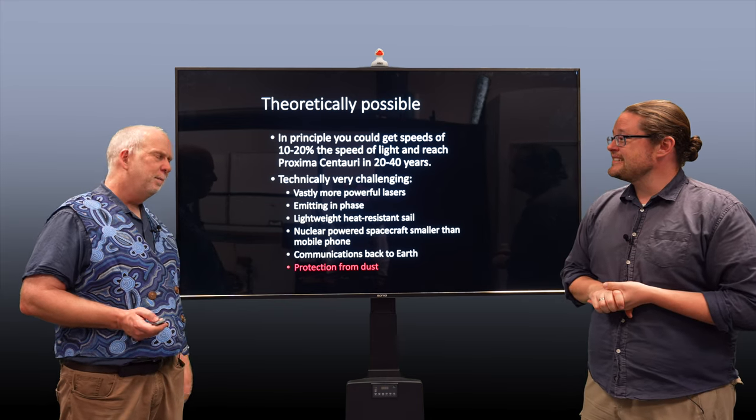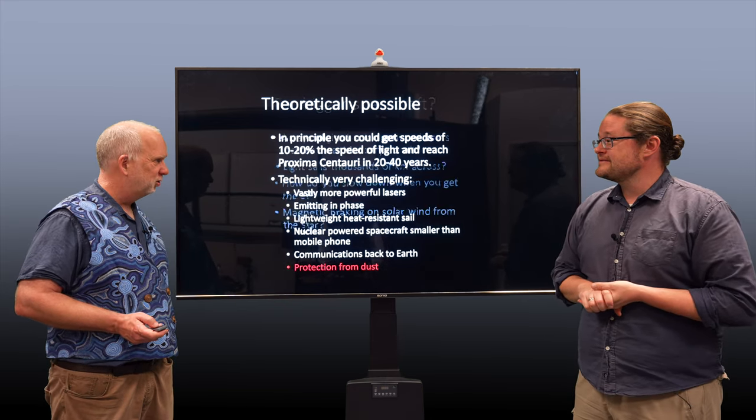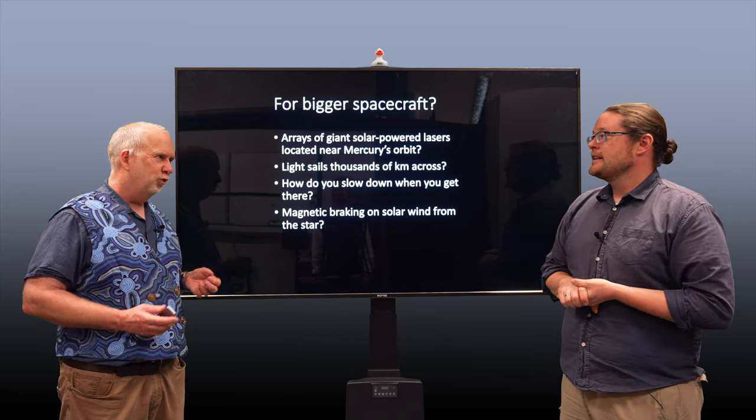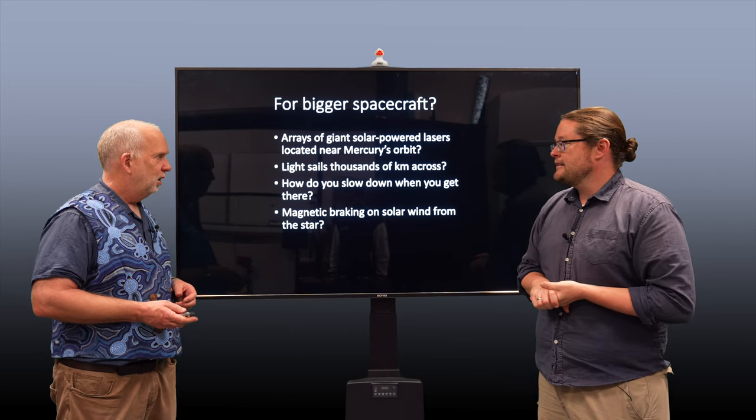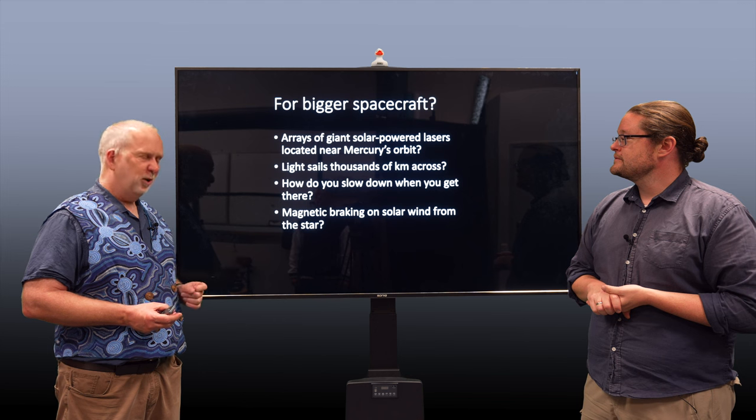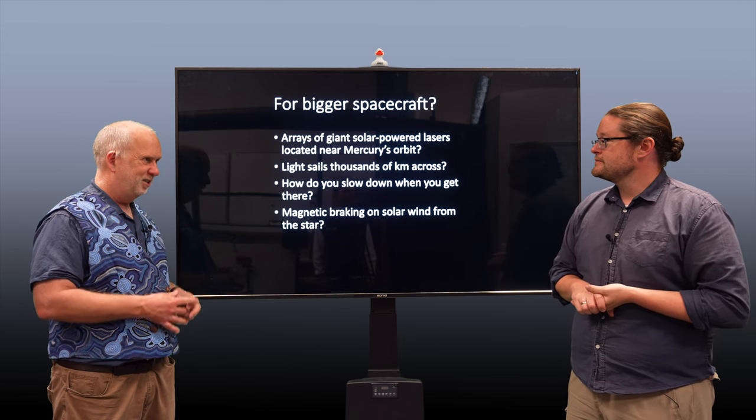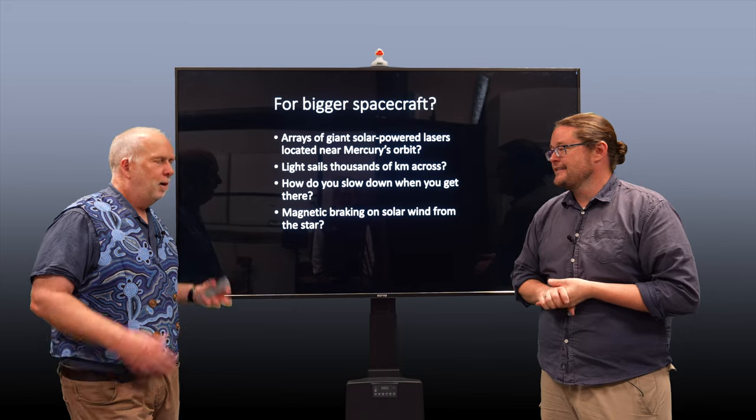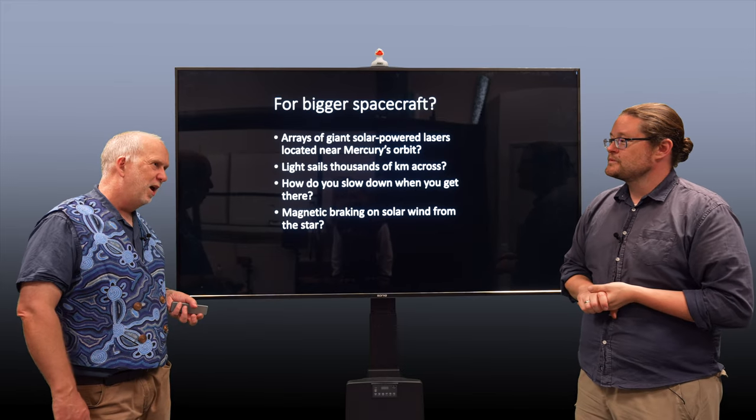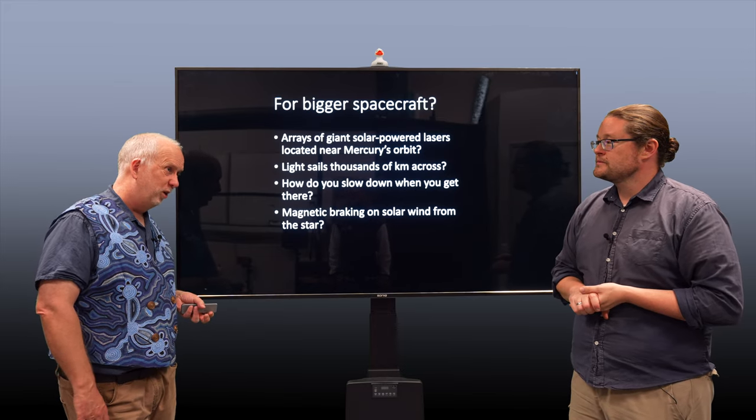So technically possible, difficult, but technically possible, maybe. But this is talking about tiny probes. Let's say you actually wanted to send people there. Well, now we're going to need... People have speculated maybe you put a huge array of giant lasers down in Mercury's orbit, where they've got really strong solar power to power them.